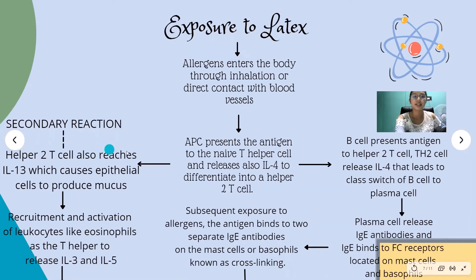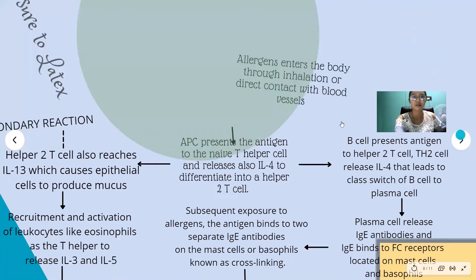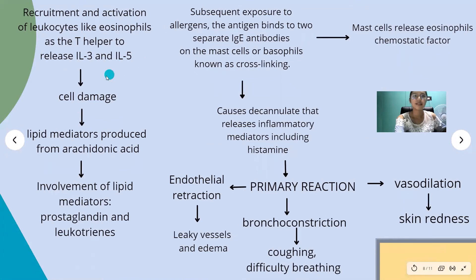The second reaction involves T-helper 2 cells releasing interleukin-13, which causes epithelial cells to produce mucus. This mucus production leads to the recruitment and activation of leukocytes such as eosinophils. T-helper 2 cells also release interleukin-3 and interleukin-5, which can cause cell damage.